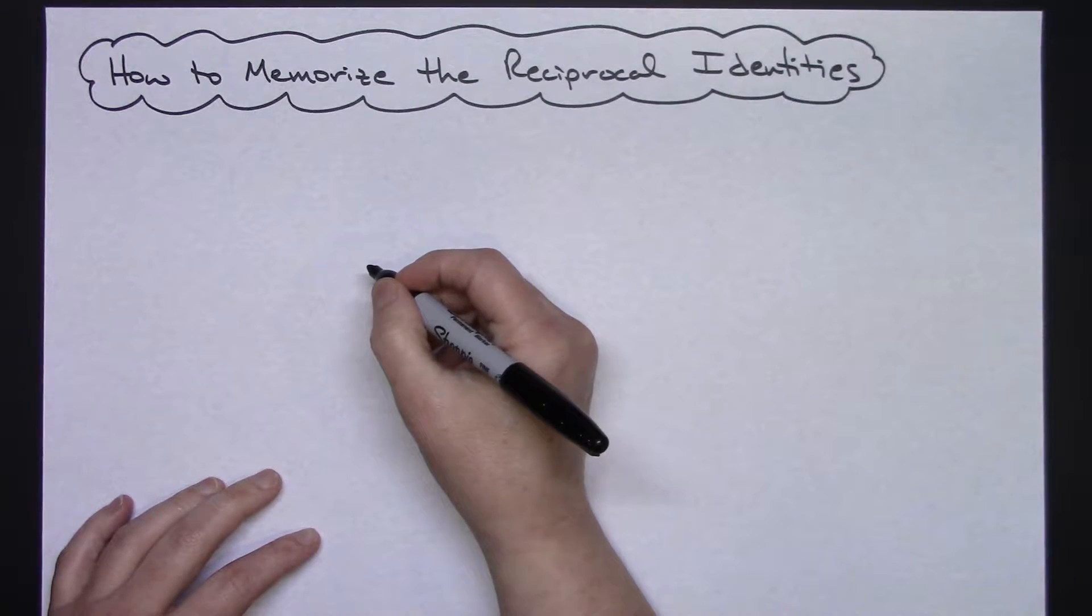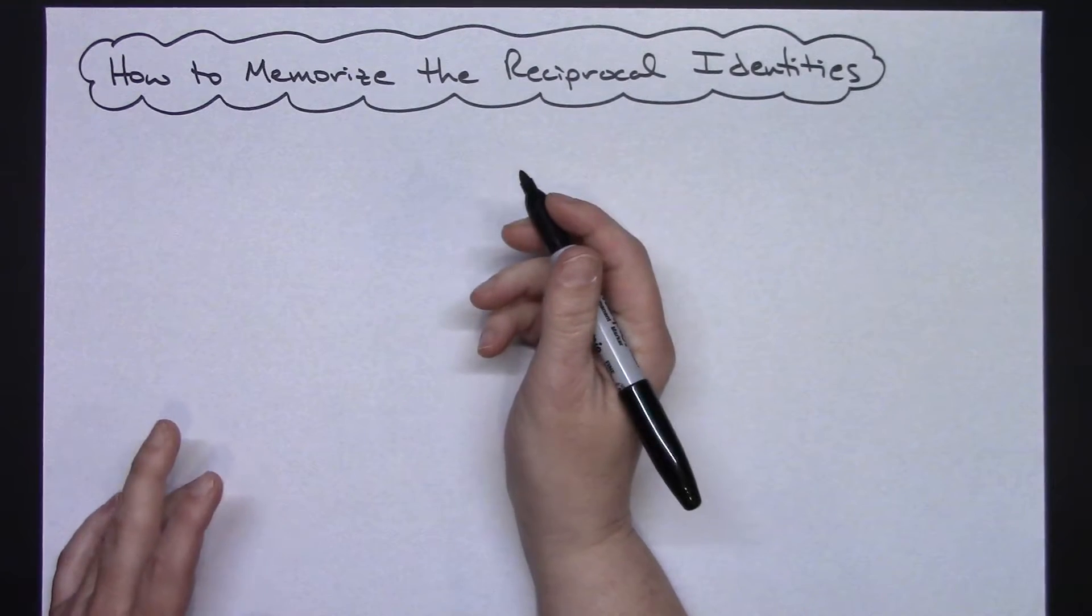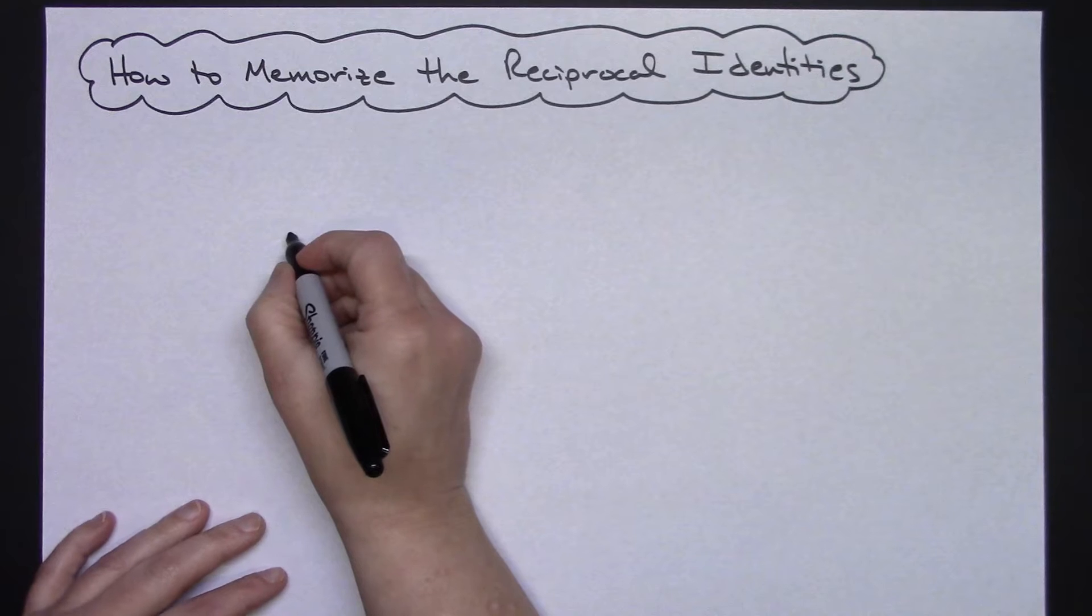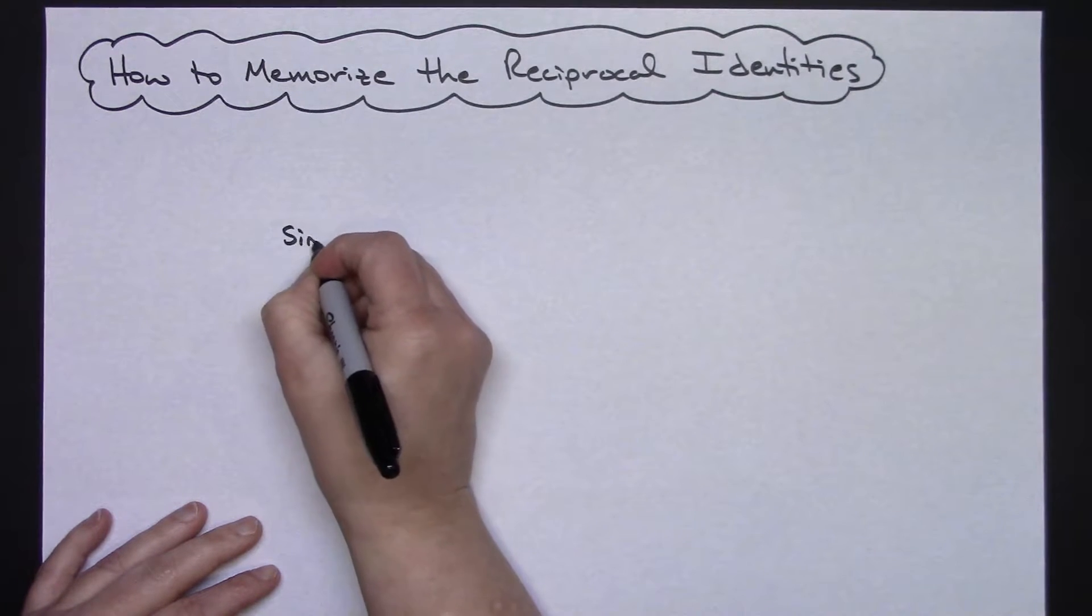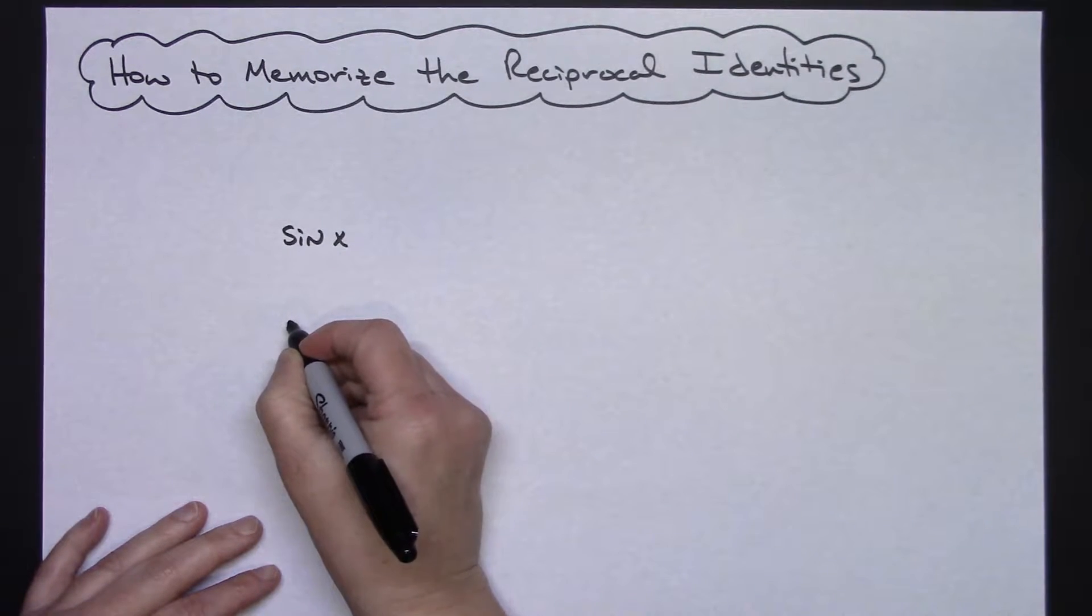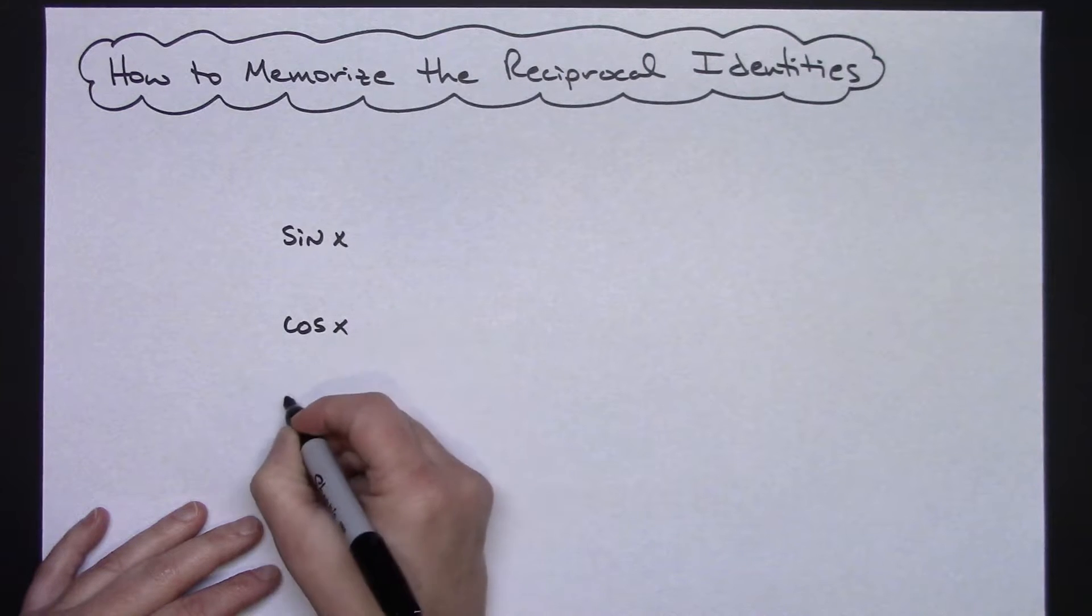For me, the three most common trig functions are sine, cosine, tangent. Usually students do not have a hard time memorizing those in that order. So we start by writing sine, then cosine, then tangent.